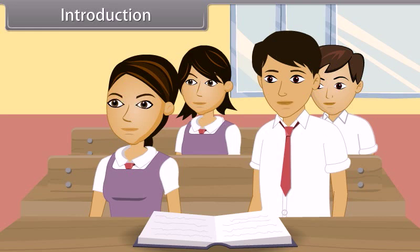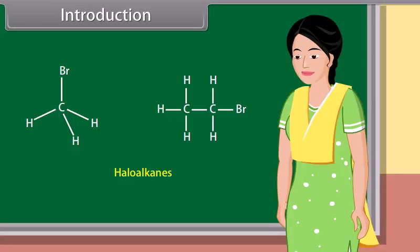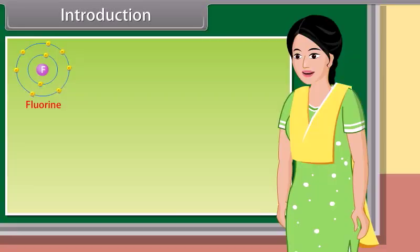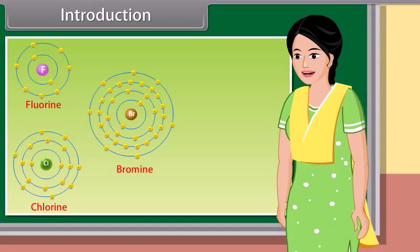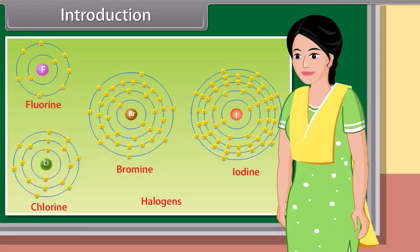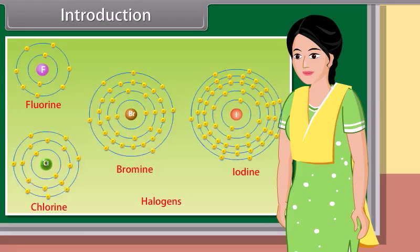Today we learn haloalkanes and haloarenes. Ma'am, what are haloalkanes? Haloalkanes are the chemical compounds in which one or more of the hydrogen atoms in an alkane have been replaced by halogen atoms.